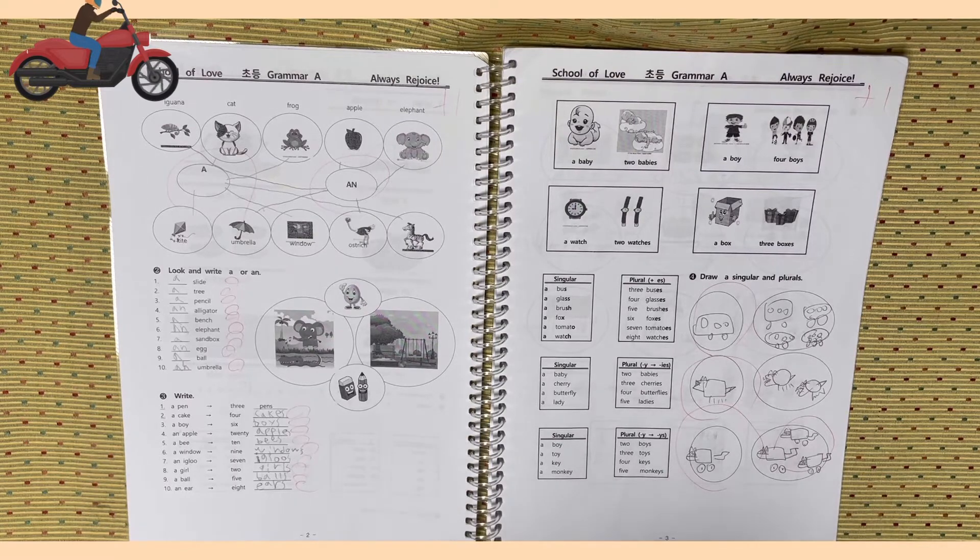6. A window. 9 blanks. 7. An igloo. 7 blanks. 8. A girl. 2 blanks. 9. A ball. 5 blanks. Number 10. An ear. 8 blanks.